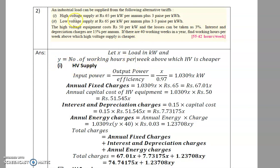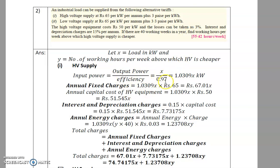For HV supply, input power = output power / efficiency. Since losses are 3%, efficiency is 0.97, so input power = x / 0.97 = 1.0309x kW. Annual fixed charges = 1.0309x × rupees 65 = rupees 67.01x. Annual capital cost of HV equipment = 1.0309x × rupees 50 = rupees 51.54x.